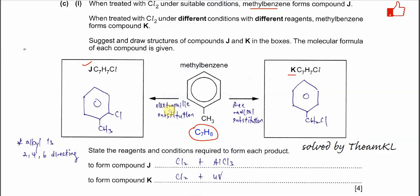For compound J, in electrophilic substitution the chlorine adds into the ring and substitutes a hydrogen on the ring. The position of chlorine is important: the alkyl group is a 2,4,6-director. Numbering the ring, the chlorine can go to the second, fourth, or sixth carbon — so you can draw chloromethylbenzene with chlorine at the 2- or 4-position.